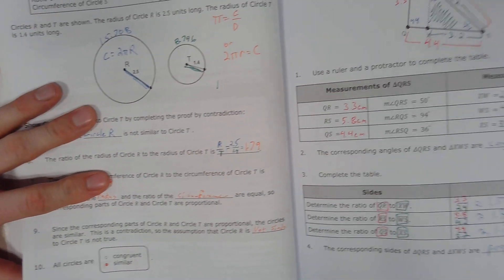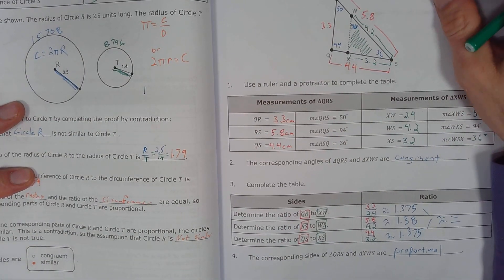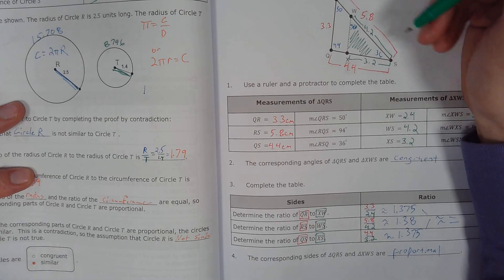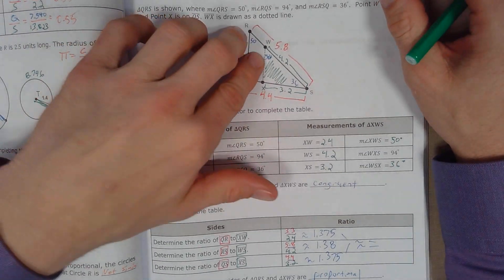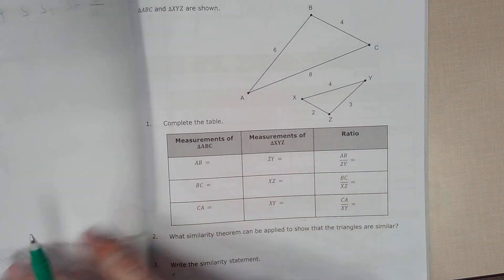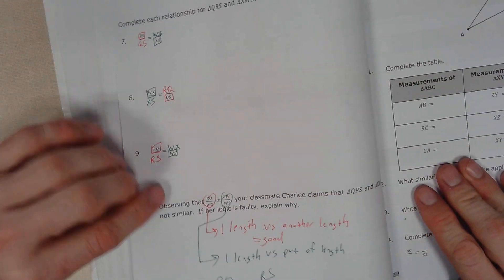This ratio is one length versus a part of another length. That would not be what you need to compare. You need to compare. The correct ratio would be RQ to WX equals RS to WS. RS to WS instead of RW to WS. That's the correct one. That's just a length, a part of a length, a line segment on length. Hopefully that makes sense to you guys.